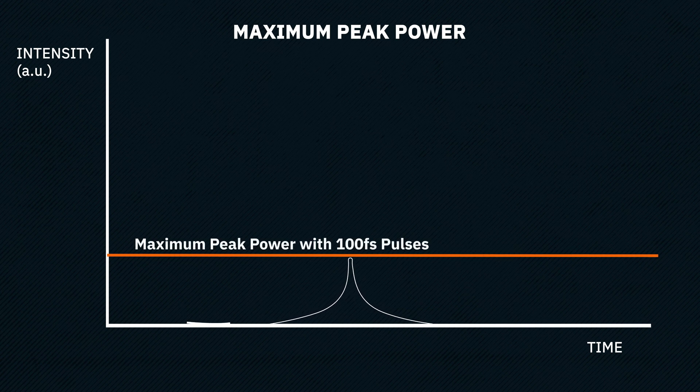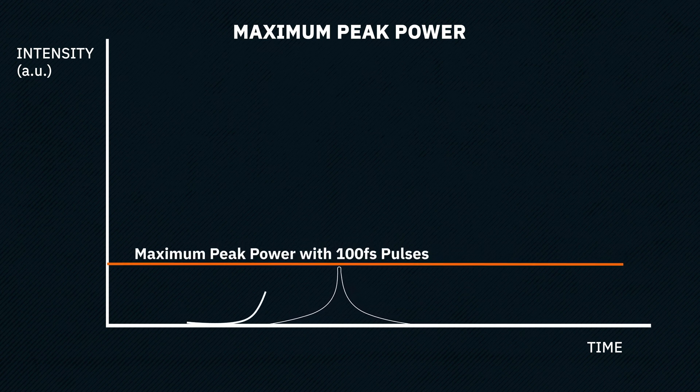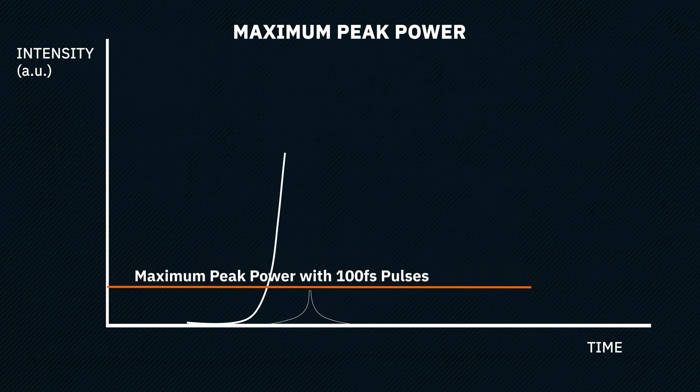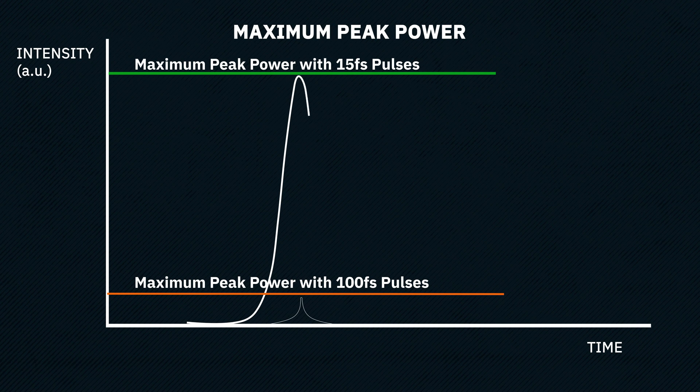However, the Phyla SCH fiber laser provides much shorter pulses of the order of 15 femtoseconds on the sample plane, which ensures about seven times the peak power of conventional 100 femtosecond lasers, leading to brighter and deeper images with lower thermal damage.